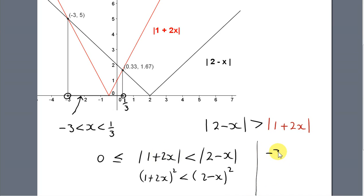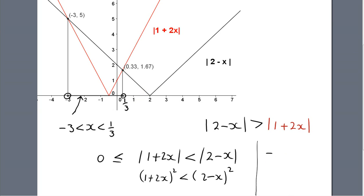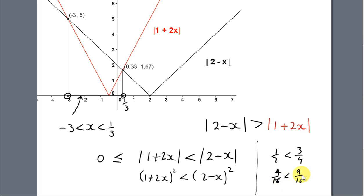For example, we know that minus 3 is less than plus 2. But if we square both sides, we get 9 less than 4, which is obviously false. On the other hand, we know that one-half is less than three-quarters. If we square both sides, we get one-quarter less than nine-sixteenths, which is true — since one-quarter equals four-sixteenths, which is clearly less than nine-sixteenths. So squaring is allowed only if both quantities are positive.